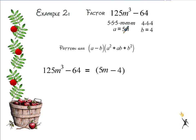For my middle term, I need to multiply them together. 5m times 4 is 20m. And for my last term, I need to square 4, which gives me 16.